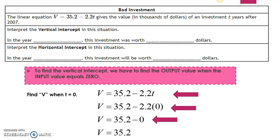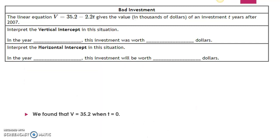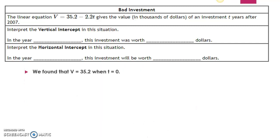That simplifies to v equals 35.2 minus zero, which gives me a final value of v equals 35.2. So now we have to put that into an ordered pair to form the vertical intercept. We found that v equaled 35.2 when t equals zero.